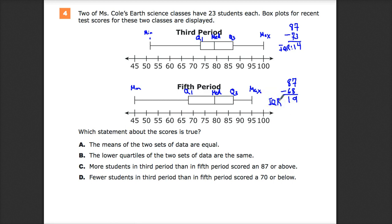So now they want to know which statement about the scores is true. A, the means of the two sets of data are equal. Well, the medians are located in a very similar position. That's not the same thing as the mean. The mean value would be the average of the values. If there's any real shifting, you'll start to see that there's probably not going to have the mean with the same value.